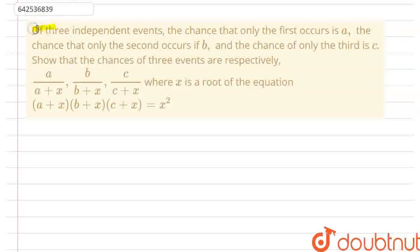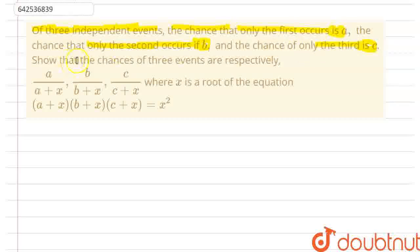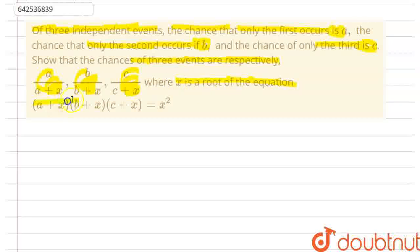In this question, we are given that of three independent events, the chance that only the first one occurs is A, the chance that only the second one occurs is B, and the third one occurs is C. We need to show that the chances of three events are respectively A by A plus X, B by B plus X and C by C plus X, where X is the root of the equation A plus X into B plus X into C plus X equals X squared.